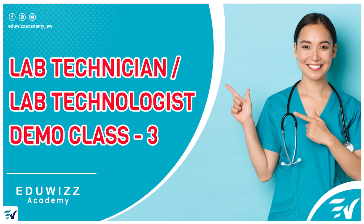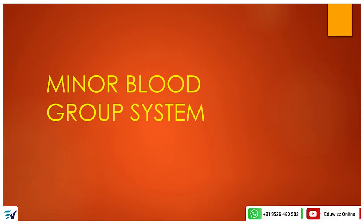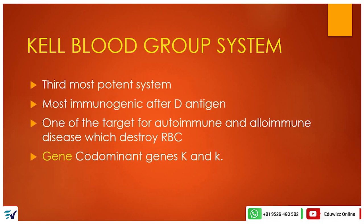I am going to show you the topic of major and minor blood groups. Major is ABO and RH blood group system, and minor is a lot of blood group systems. The topic for today is the Kell blood group system, which is the third most potent system — most immunogenic after the D-antigen. It is one of the targets for autoimmune and alloimmune disease which destroy RBCs, causing autoimmune hemolytic anemia and alloimmune hemolytic anemia.